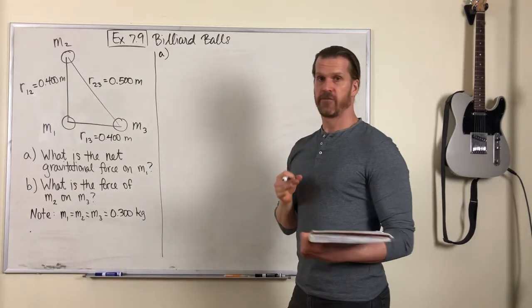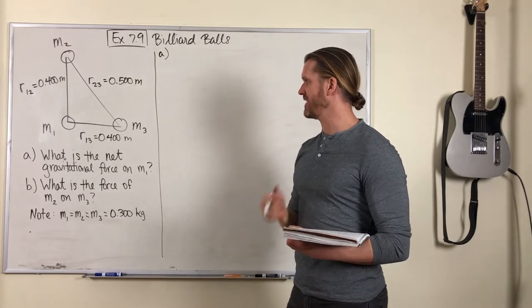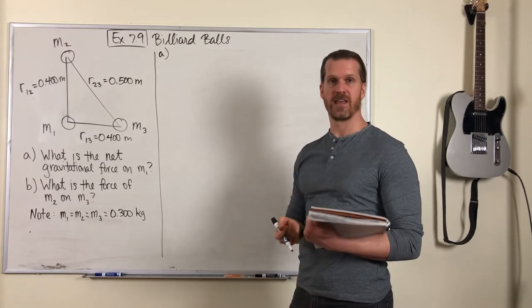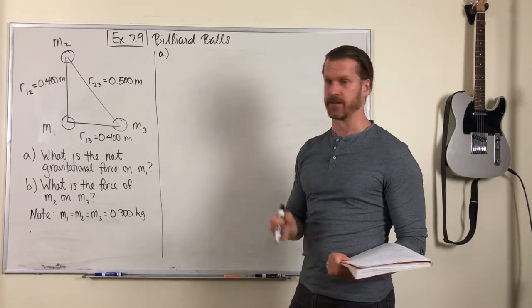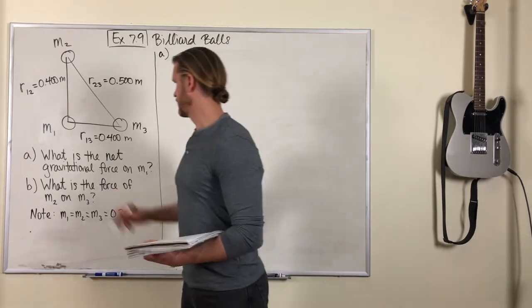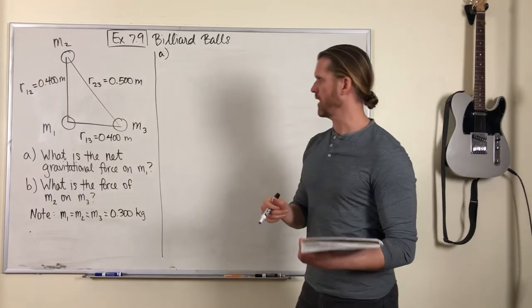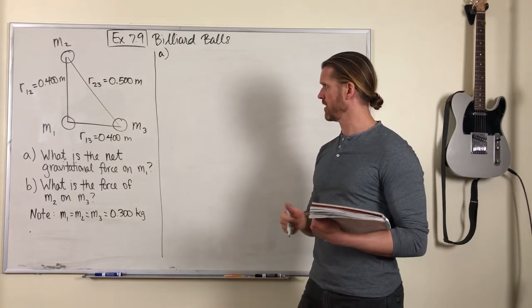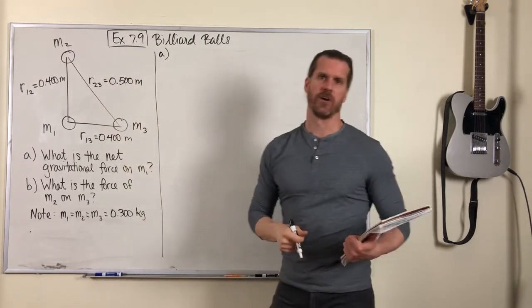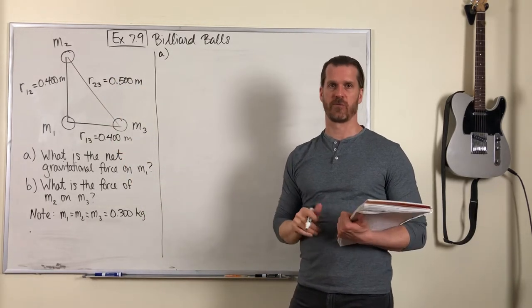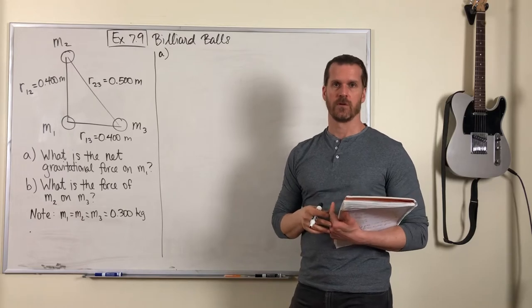We're going to answer two questions. First one is, what is the net gravitational force on M1 due to the fact that the other two billiard balls are pulling on it? And the second question is, what's the force of mass 2 pulling on mass 3? Just the force between those two objects.